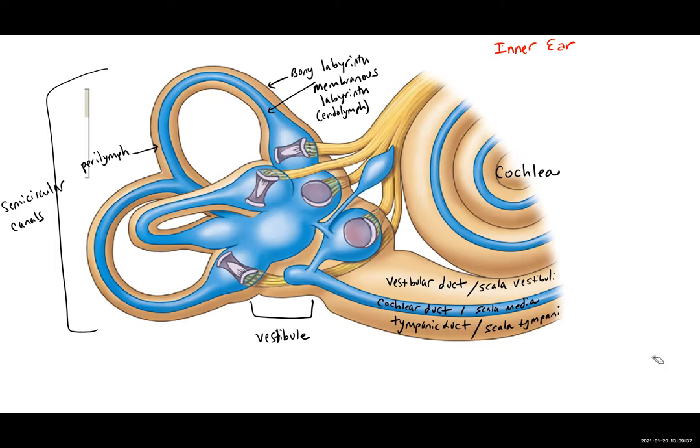When we take a look at the vestibule, we see our membranous sacs, and we have two specific ones: the saccule and the utricle.